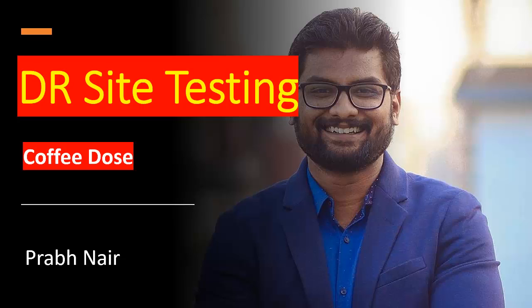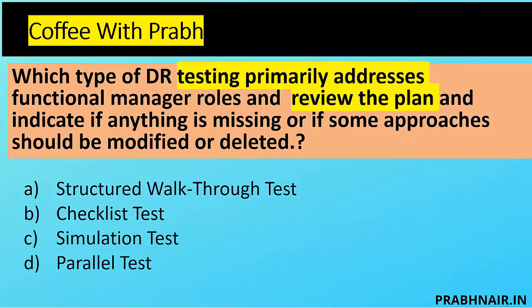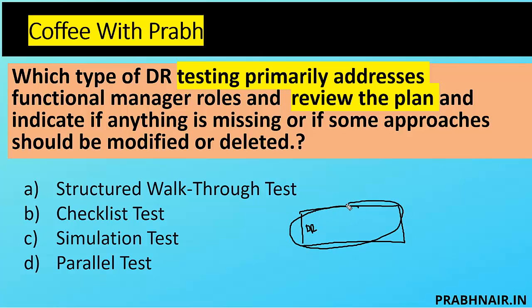Which type of DR testing primarily addresses functional roles and reviews the plan to indicate if anything is missing or if some approaches should be modified or deleted? Option A is structured walkthrough. In a structured walkthrough, we literally walk through the test to make sure everything is correct. The DR coordinator has a discussion after distributing the plan to everyone, reads through the plan, and walks through the entire plan.